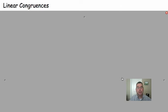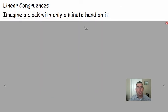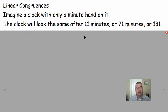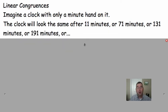We're talking about linear congruences. To introduce this topic, I want you to imagine a clock that only has a minute hand on it, so like the hour hand broke off or something like that. Whatever time you start with, after 11 minutes, the minute hand will be in a certain position, but after 71 minutes, it'll be in the same position, or after 131 minutes from when you originally started, or 191 minutes. The minute hand is going to be in the exact same position from the start point, waiting each of these periods of time.